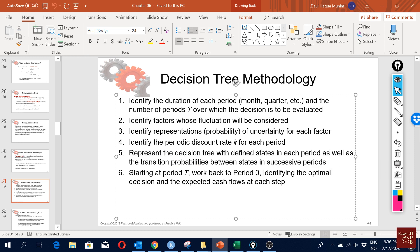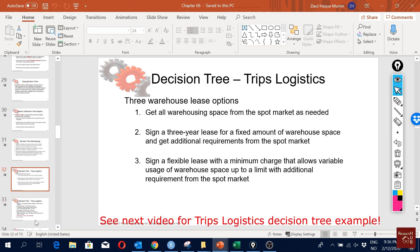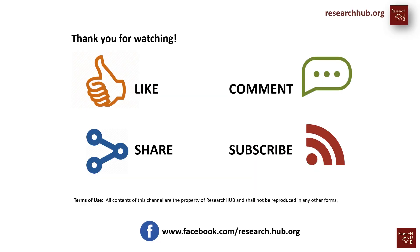Then we identify the optimal decision and expected cash flow for each state. We will see how to do that. We will actually extend the trip logistics example.